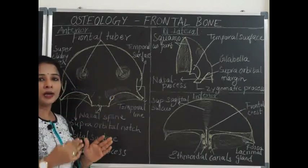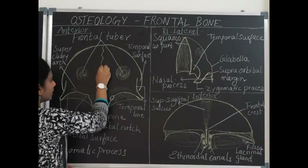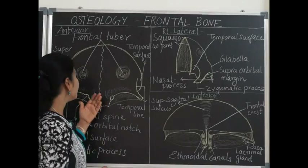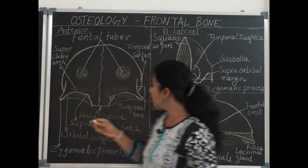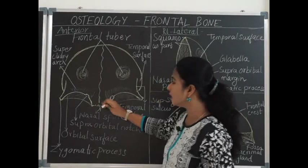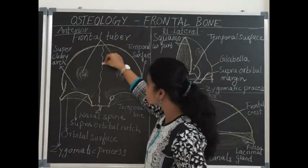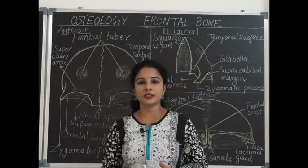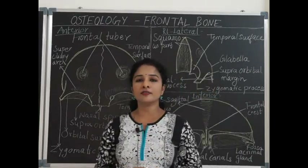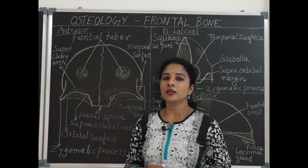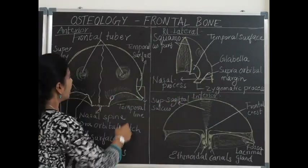The frontal bone develops bilaterally as two separate bones. These two bones are joined by a suture in the midline called the metopic suture, which gets ossified before eight years of age. A remnant of the metopic suture can sometimes be seen in the lower part in adults, present in about 10% of individuals. Physiologically it makes no difference, but clinically it is important to differentiate it from fractures during radiological diagnosis.